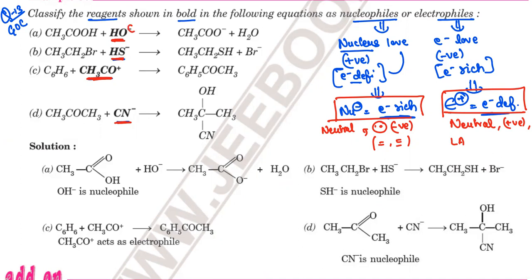Let's look at OH⁻. On oxygen, you can see there is a negative (minus) charge. If it carries a negative charge, that tells us it is electron rich. Therefore, OH⁻ would be a nucleophile.